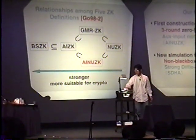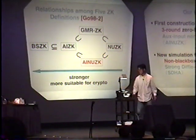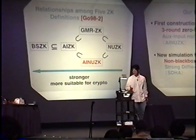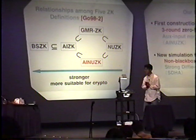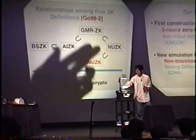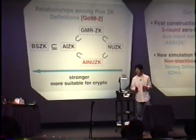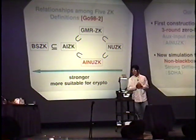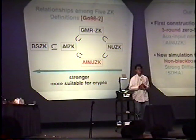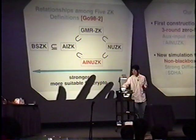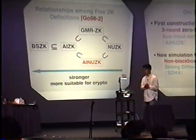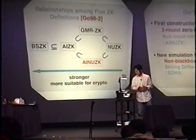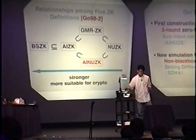ESPK is the most suitable for cryptographic application. This is because AIGK is closed under sequential composition. But GMRGK is not considered suitable for cryptographic application, because GMRGK is not closed under sequential composition. But unfortunately, AIGK does not imply AI-NGK. And this is because there is a protocol which satisfies AIGK but not AI-NGK. So it is unknown whether AIGK is suitable for cryptographic application.